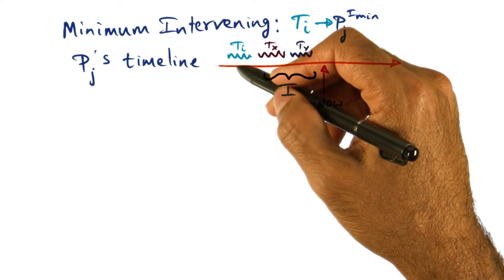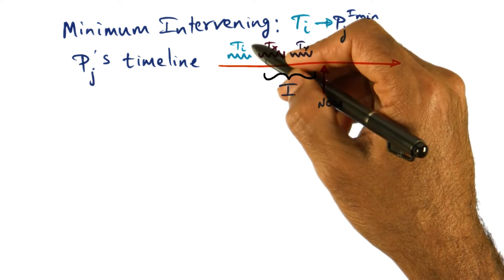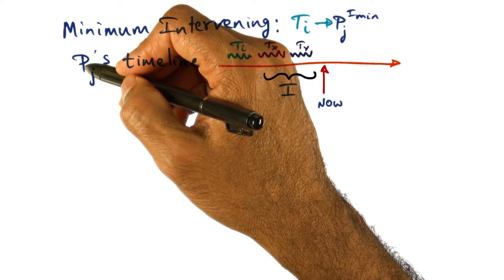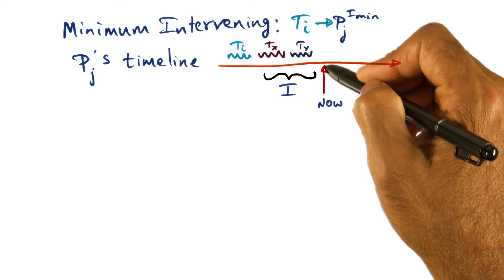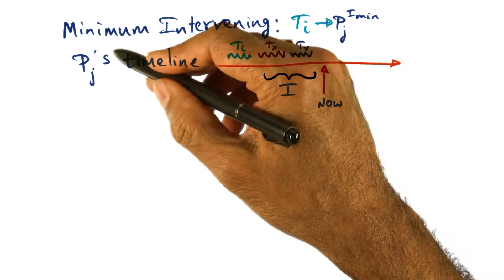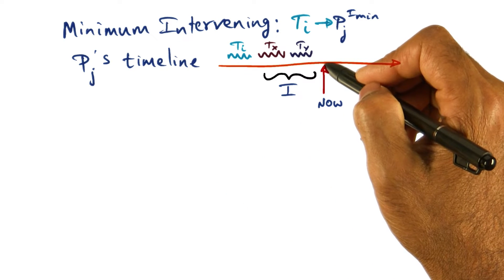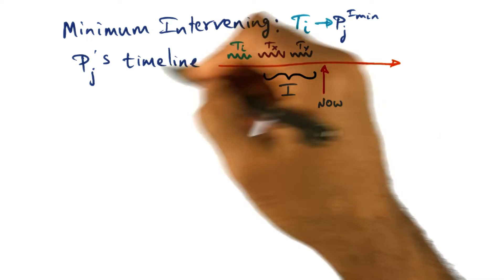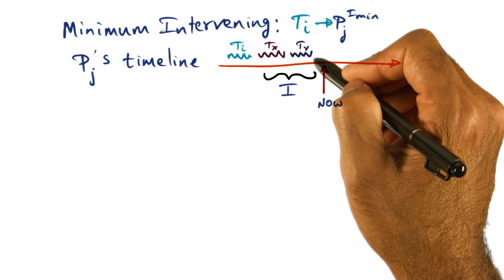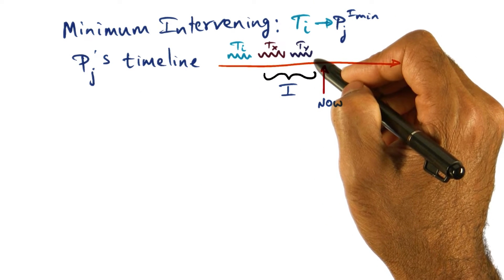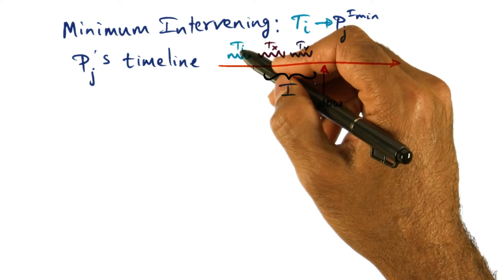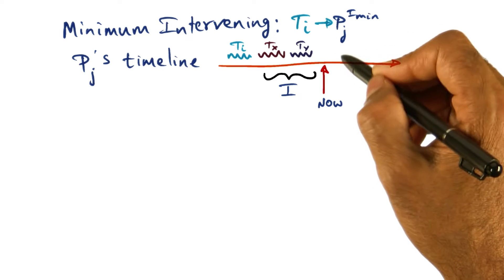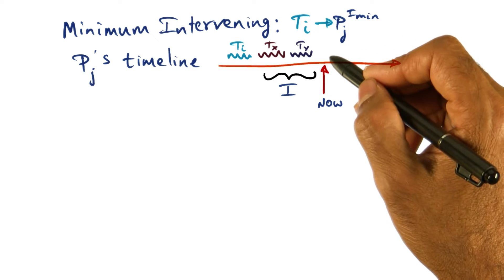So now, if I want to think about the affinity for TI with respect to this process of PJ, that affinity, if we're going to schedule TI now on PJ, the affinity number that I want to compute for this guy is 2, indicating the number of intervening threads that ran on PJ between the last time TI ran on it, and if I schedule TI now at this point of time.